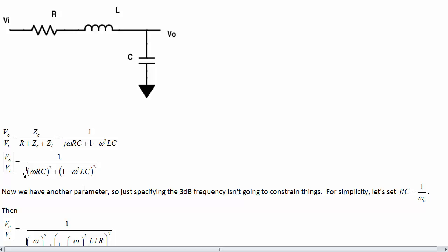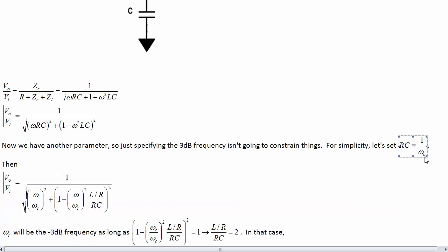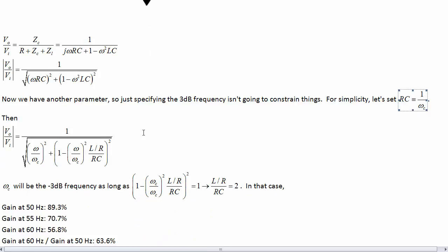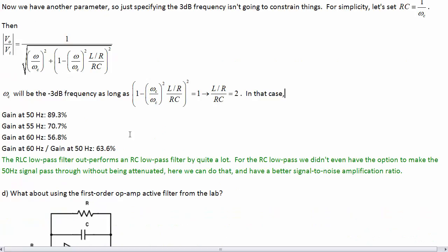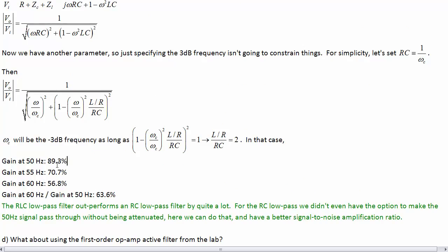Now, what about this RLC low-pass filter? Now, we've got another parameter. So, just saying what the 3 dB frequency is is not going to constrain things enough. So, let's also, let's just arbitrarily set RC equal to 1 over omega C, and we'll look at some of the consequences of this later. Then, omega C is the 3 dB frequency as long as this condition on L is the case. So, what we get is a fair bit better performance. We've got 90% at 50 Hz and 57% at 60 Hz. So, we've rejected a lot more of the 60 Hz signal compared to the 50 Hz signal.